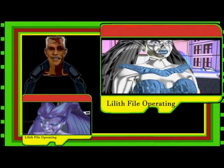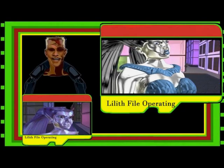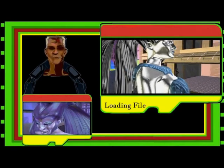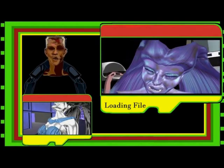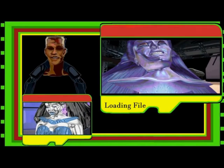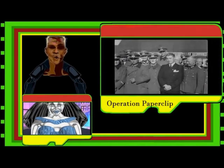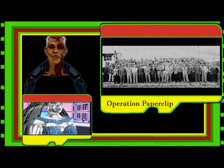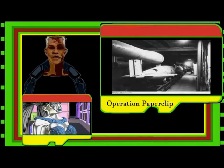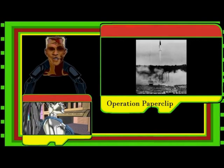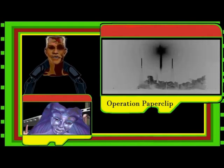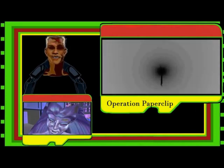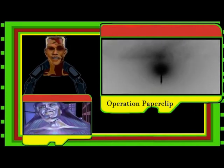Lilith's architect was an SS scientist smuggled into the USA during the extremely secret project known as Operation Paperclip — a secret program where more than 1,600 German scientists and engineers were smuggled into the USA between 1945 and 1959. Many were members of the Nazi party and some were SS officers. During World War II, these individuals were involved in the development and production of the V1 and V2 rockets at two German facilities called Peenemünde and Mittelwerk. Many slave laborers were worked to death at Mittelwerk. The smuggled scientists and engineers were responsible for thousands of deaths. One of these scientists was an early computer engineer and was the architect of the Lilith algorithm.